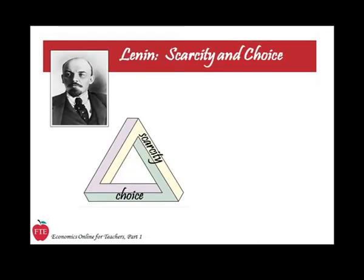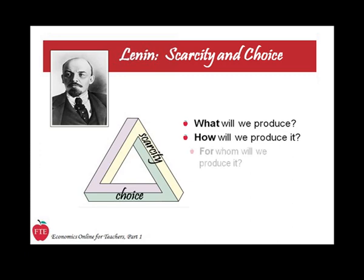Like the thousand years of Tsars, like Nicholas and Kerensky before them, the Bolsheviks faced scarcity — a reality starkly apparent in an underdeveloped country ravaged by internal and external warfare. Lenin, immediately and continually, had to make choices about production and consumption in order to answer the three basic economic questions: what to produce, how to produce it, and for whom to produce it.